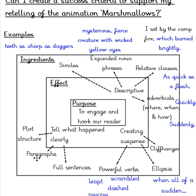Now it's time to have a go at creating your own success criteria. When drawing your success criteria, remember it will need four sections. Start with the middle — the purpose — and work outwards. Remember to have your paper landscape to allow for more room. Use a ruler and pencil to support your presentation. You're welcome to magpie ideas from the success criteria I've created, however I would like to see lots of your own examples too. Don't forget to take a picture of your work and upload it to ClassDojo under your portfolio, where I can see how you've got on and give you some feedback. Thank you, Year 5. Bye for now.